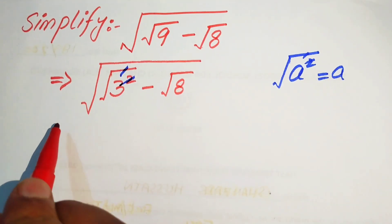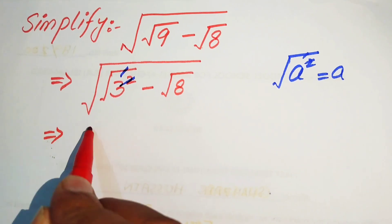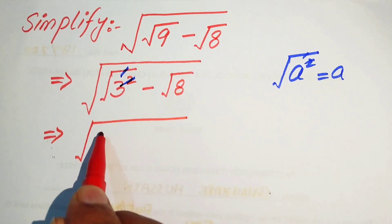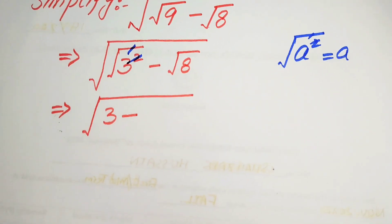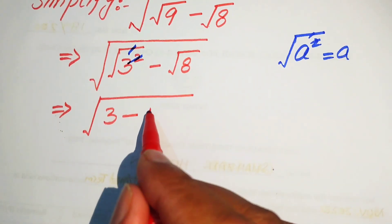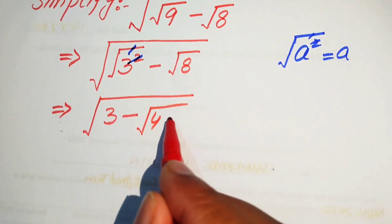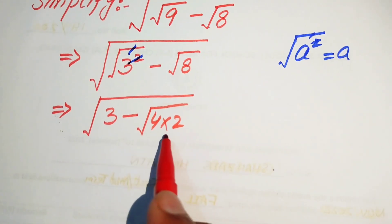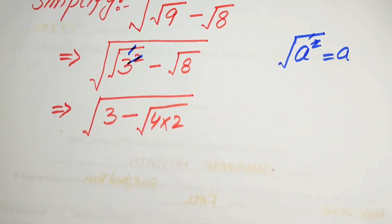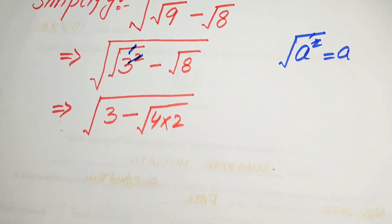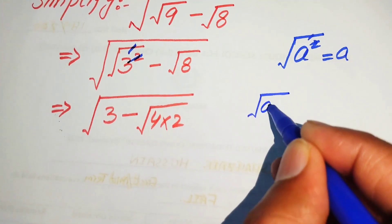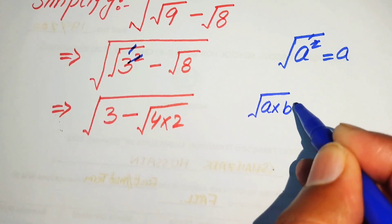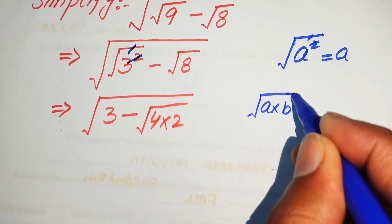We obtain 3. So we write it as 3 minus, and now we write this 8 as 4 times 2. We know that 4 times 2 equals 8. Now we use another radical law: if you have square root of a multiplied by b, we write it as square root of a multiplied by square root of b.